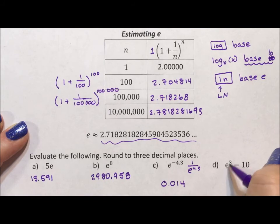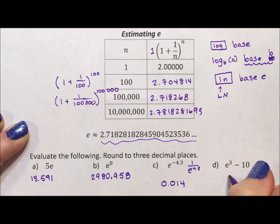E cubed, well, 2 cubed is 8, 3 cubed is 27. So this should be somewhere between 8 and 27, a little bit closer to 27, because we're over halfway. And if we plug this into our calculator, we get 10.086, which is exactly what was predicted.